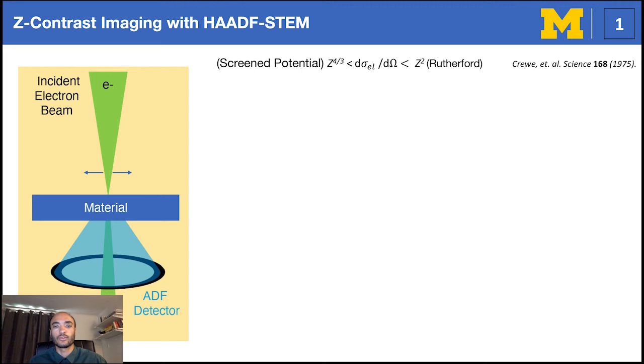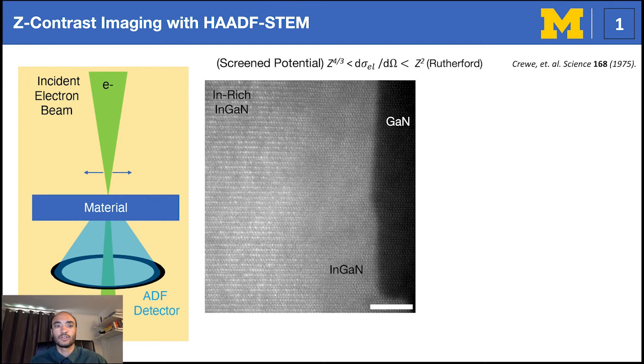HAADF imaging can identify phases consisting of noticeably different atomic numbers at high signal-to-noise ratios. We can assess the atomic structure of a three-phase interface composed of alternating indium and gallium-rich atomic layers, a homogeneous mix of InGaN and pure gallium nitride. HAADF micrographs, however, tend to under-describe chemistry for specimens of variable thickness or similar z number.